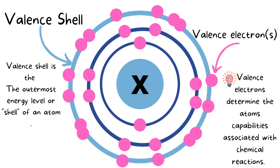Valence electrons are super important because the number of them determines the atom's ability to interact in chemical reactions. These valence electrons are going to be doing all of the interaction and communication with other atoms. It's very useful to have a quick reference to the number of valence electrons an atom might have.